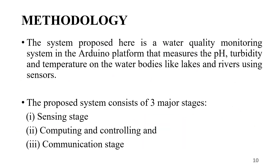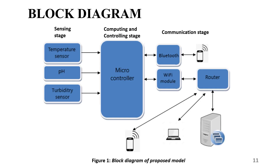The methodology: the system proposed here is a water quality monitoring system on the Arduino platform that measures pH, turbidity and temperature of water bodies like lakes and rivers using sensors. The proposed system consists of 3 major stages: the sensing stage, computing and controlling, and the communication stage. In the block diagram, the sensing stage uses temperature, pH and turbidity sensors; then the computing and controlling stage uses the Arduino microcontroller; and then the communication stage involves the Bluetooth module, smartphone and other communication components.